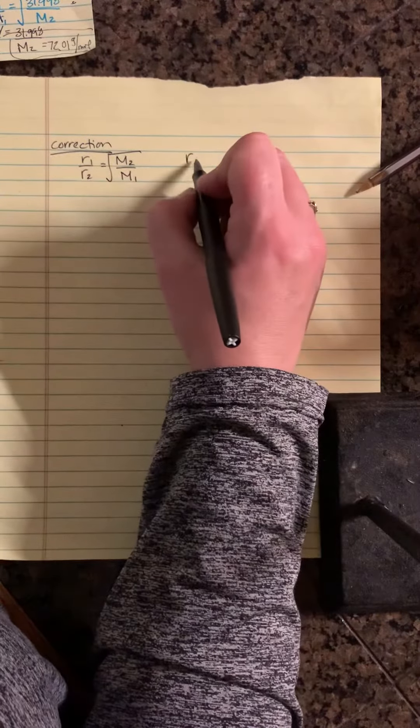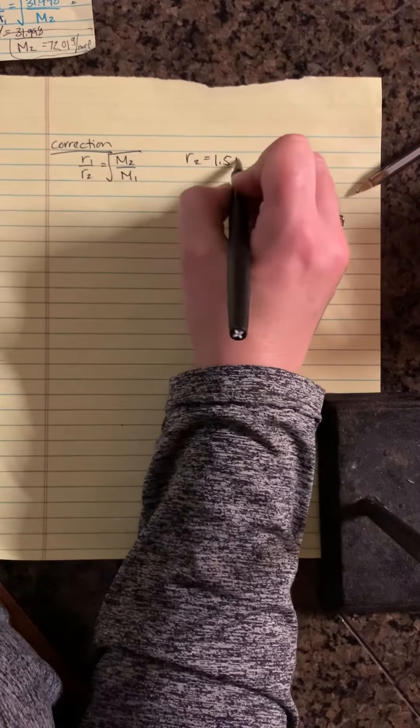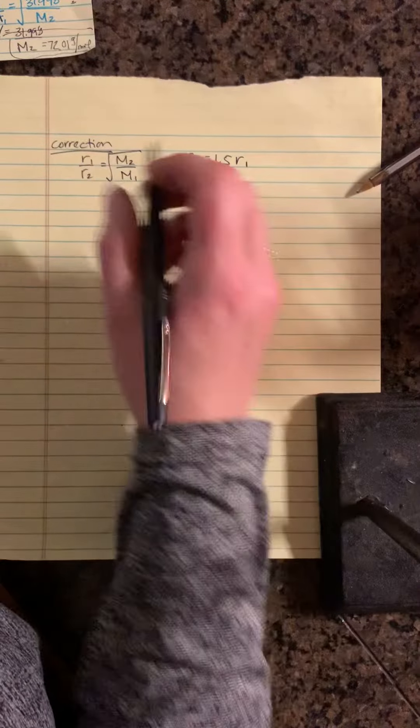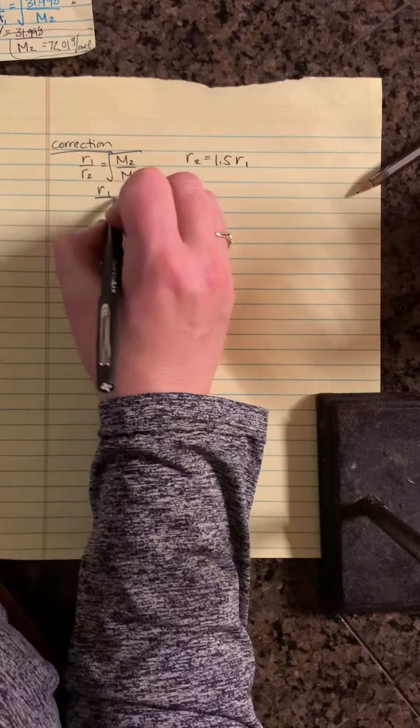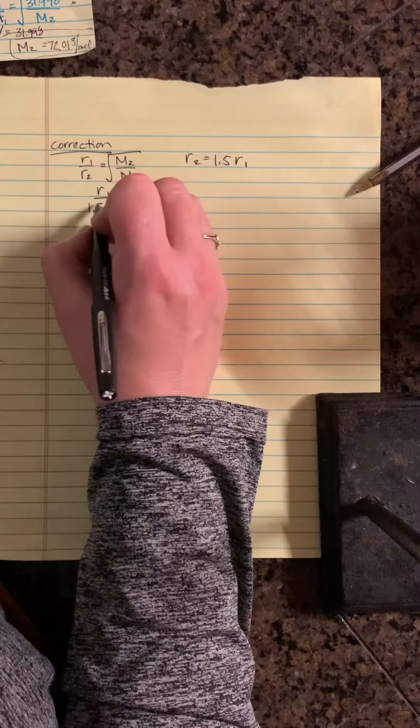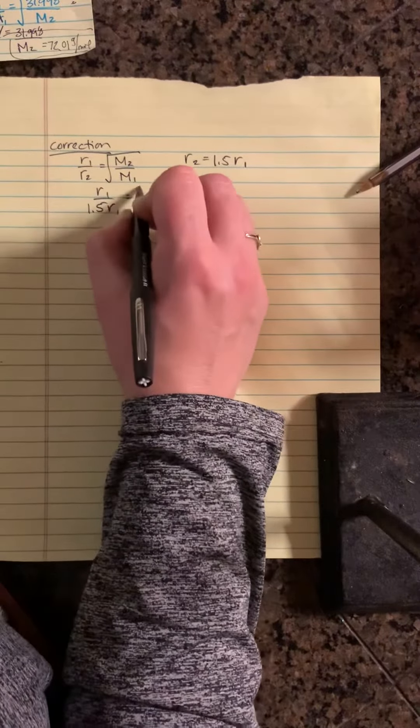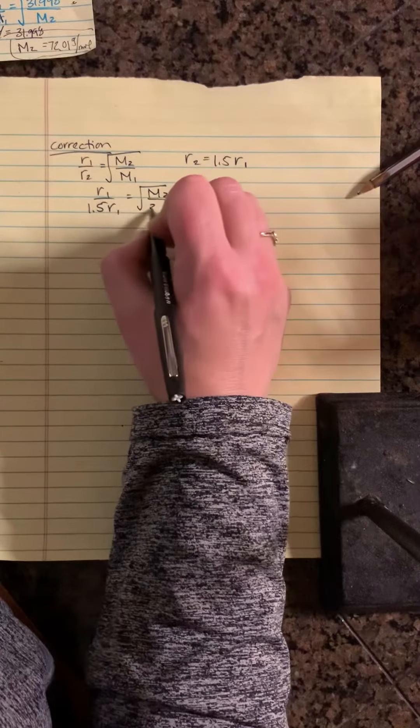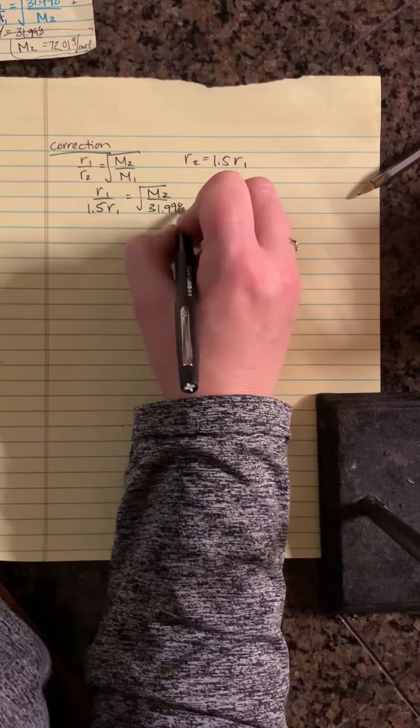So we know that R2 is equal to 1.5R1, so we're still going to make that substitution. R1 over 1.5R1 is equal to the square root of M2, which is our unknown, over 31.998.